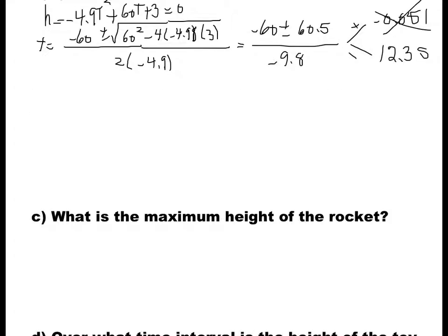Part c asks what is the maximum height of the rocket. Since this is a quadratic function and a equals negative 4.9, which is negative, the parabola opens downward, so the vertex is the maximum. To find the vertex, the x-coordinate is negative b over 2a, which equals negative 60 over 2 times negative 9.8, giving us 6.12. So the maximum occurs after 6.12 seconds.